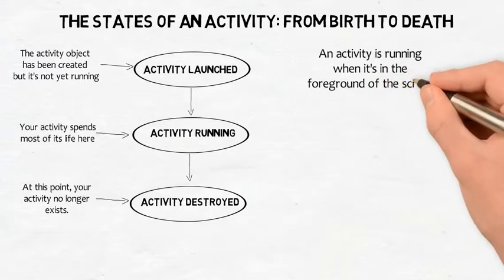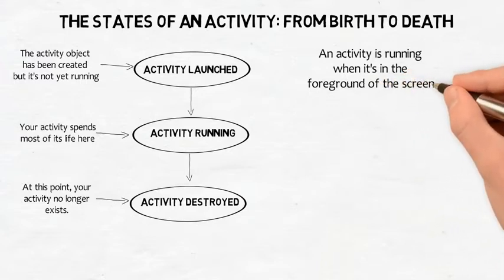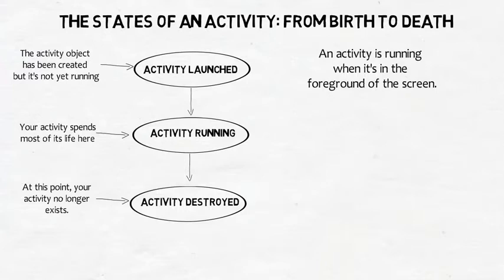An activity starts running after it has been launched, and at the end of its life, the activity is destroyed. When an activity moves from being launched to being destroyed, it triggers key activity lifecycle methods — the onCreate and onDestroy methods.